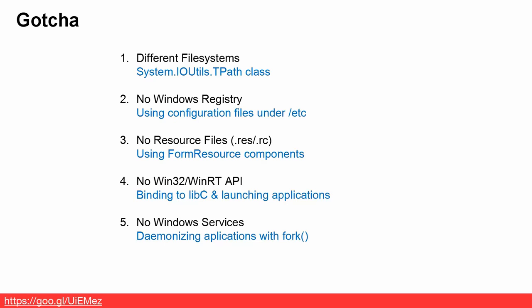First of all, Linux and Windows have very different file systems, and navigating the file system on Linux is unfamiliar to anybody who's not used it before. There is a class TPath in the System.IOUtils library which can help us find some useful directories on the Linux system, so we're going to take a quick look at that class.